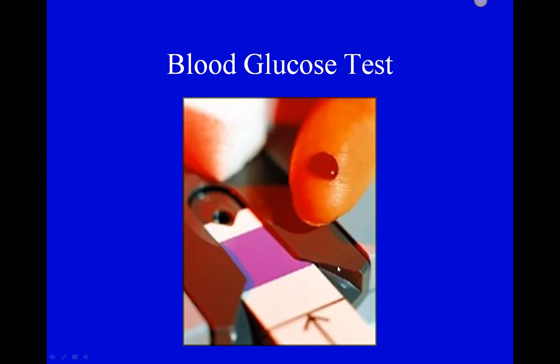A blood glucose test takes just a minute amount of blood — from a fingerprick, earlobe, side of the finger, or hand — and runs it through a machine. In hospitals, these may be done every four or six hours, or morning and evening. If levels are really out of balance, a true blood glucose from a vein is obtained.